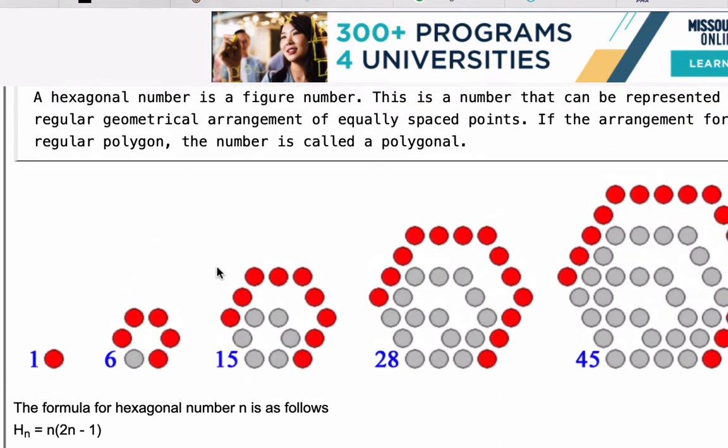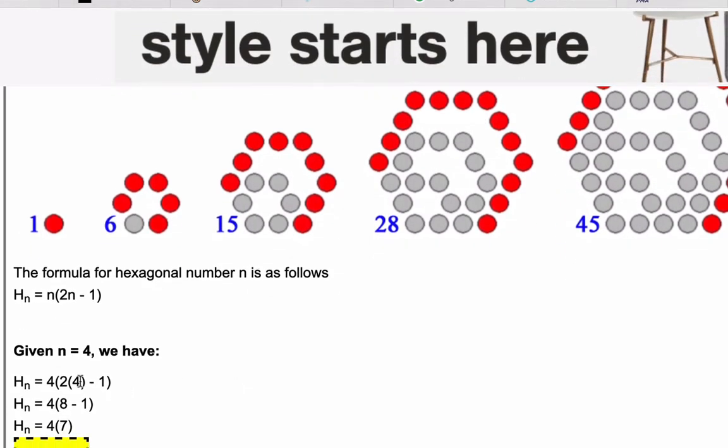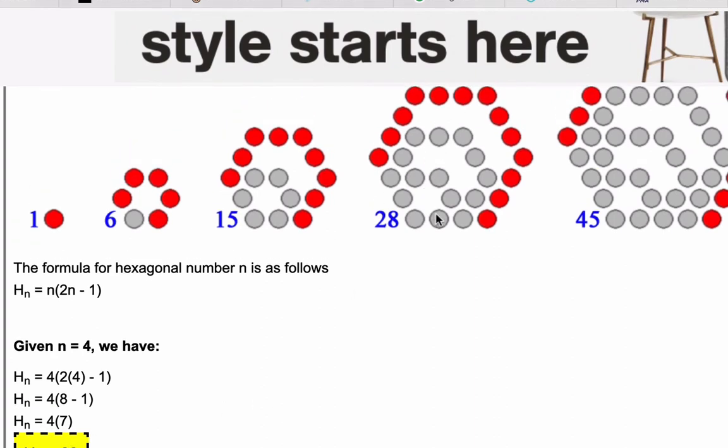And what the calculator will do is figure out what you entered, in this case 4. And it'll plug in 4 for n, run it through this formula here, simplify, evaluate, and get 28, which is of course what we have in our fourth hexagonal number.